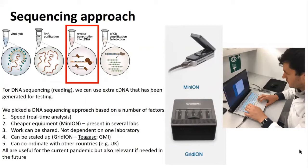The MinION can be scaled up to the GridION for higher throughput. Such a device is present at Genuity Science in Dublin, and Teagasc has also purchased one specifically for this purpose — useful for food and agriculture research but also timely for this national effort. The approach also allows coordination with the UK coronavirus sequencing consortium, which uses the same technologies. All of this infrastructure is relevant not just for the current situation but for future COVID waves and future pandemics.